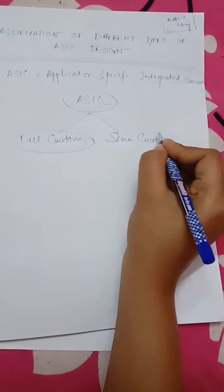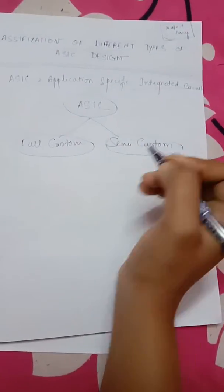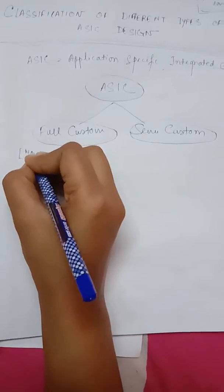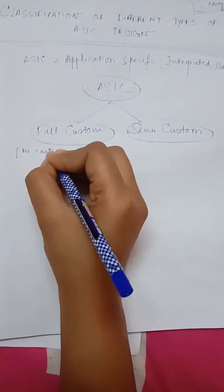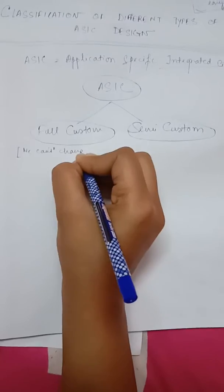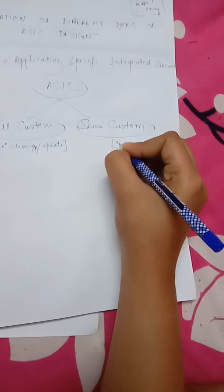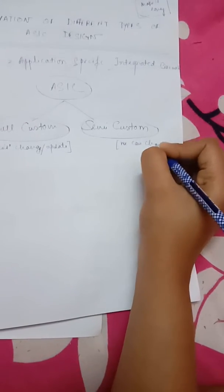Full Custom design is one where we can't change or update the design, whereas in Semi-Custom we can change.